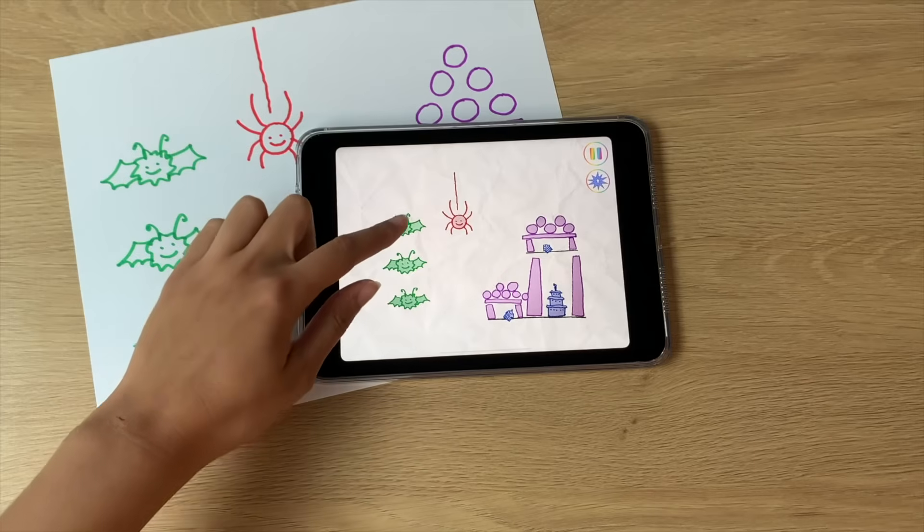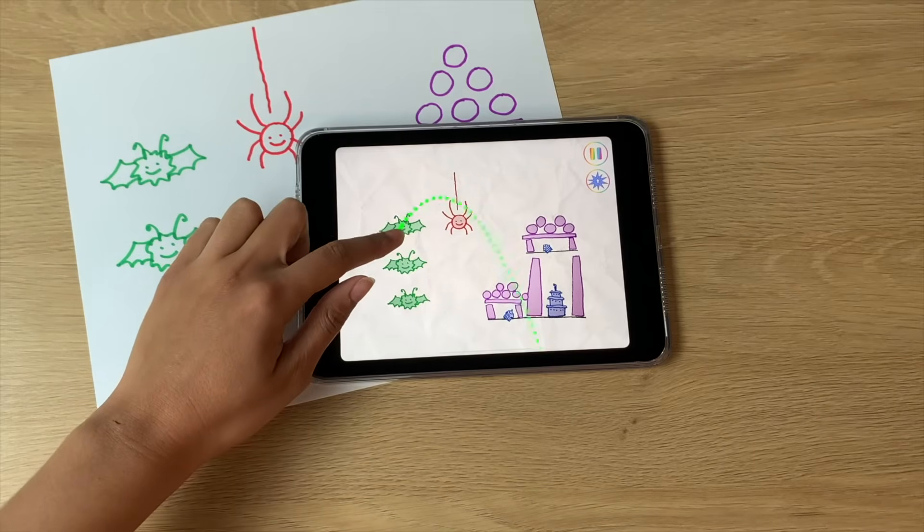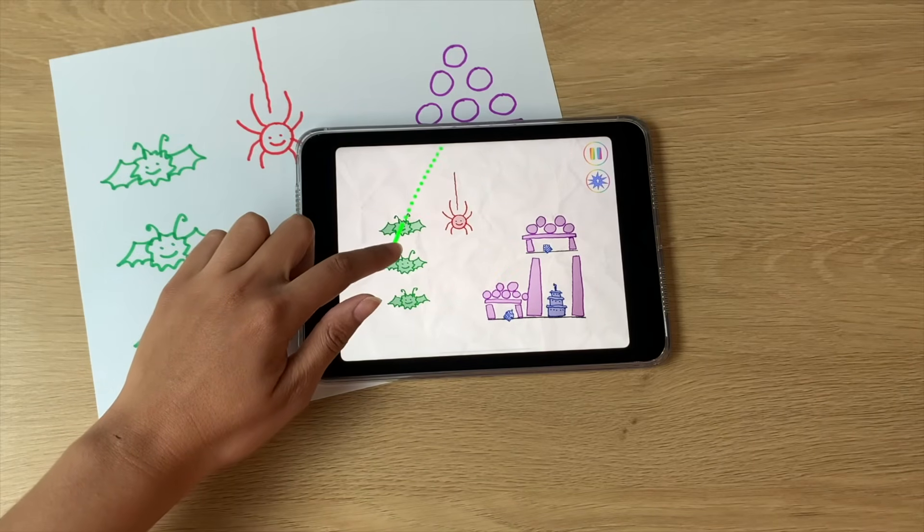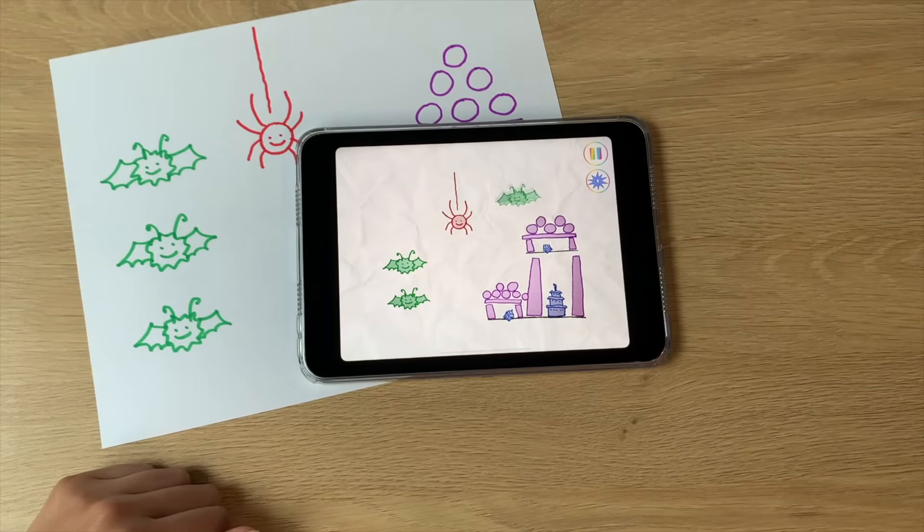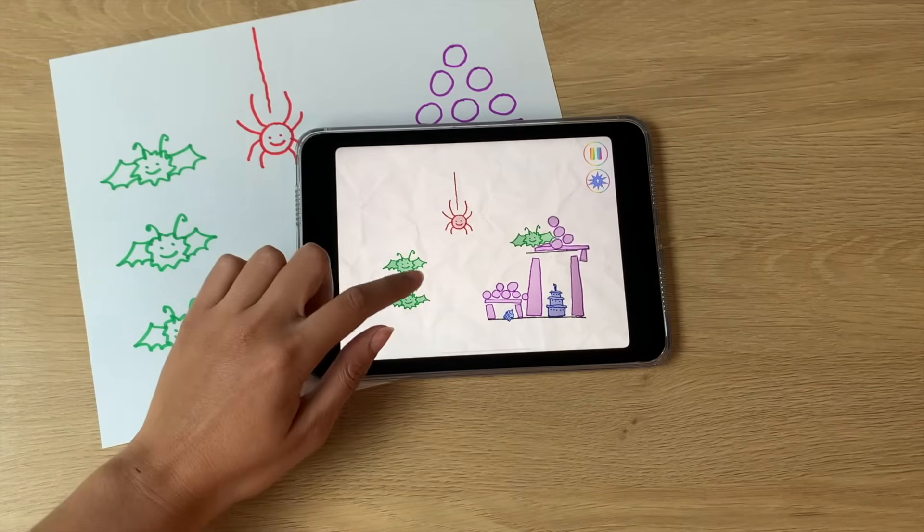Collect blue goals by launching green avatars at them. Launch green avatars by dragging your finger. You will see a green dotted line which represents the path that the avatar will take when you let go.